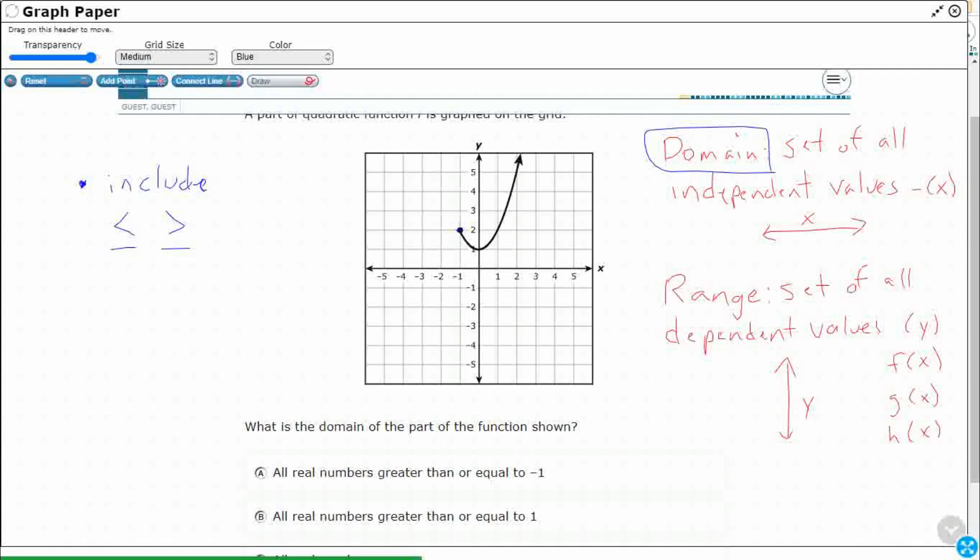Sometimes on problems like this we'll see an open circle. So that means it doesn't include that number. So we're still going to do greater than or less than, but it's not going to have the equal sign.